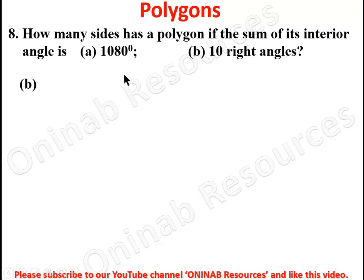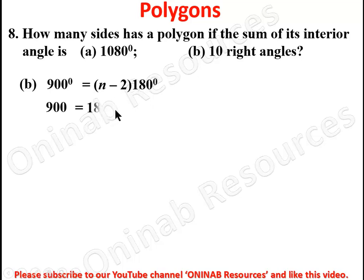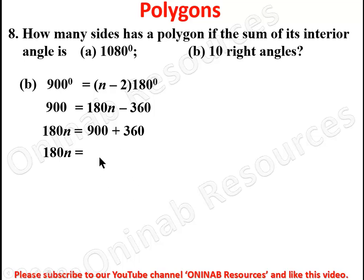For part (b): 10 right angles. A right angle is 90 degrees, so 10 times 90 gives 900. The sum of the interior angles is 900 degrees, equal to n minus 2 times 180. Expanding: 180n minus 360. Collecting like terms: 180n equals 900 plus 360, so 180n equals 1260, and n equals 7. The polygon has 7 sides.